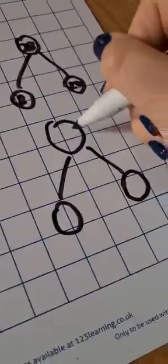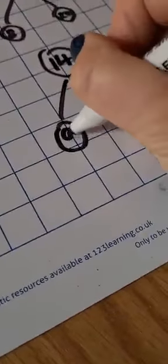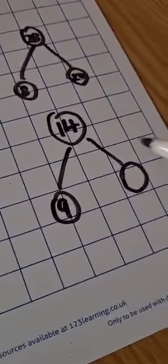So you can see we've got 14 in the top circle. It's our largest number that we know so far. We've got 9 in one of the circles and the missing number is the difference between 9 and 14.